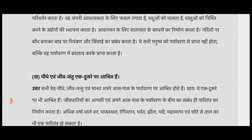पौधे, जीव-जंतु और मनुष्य अपने आसपास के पर्यावरण से प्राप्त होते हैं। प्रायः वे एक-दूसरे पर आश्रित हैं। जीवों का आपसी और अपने आसपास के पर्यावरण के बीच का संबंध ही पारितंत्र का निर्माण करता है। अधिक वर्षा वाले वन, घास स्थल, रेगिस्तान, पर्वत, झील, नदी, महासागर एवं छोटे से तालाब भी एक पारितंत्र हो सकते हैं।